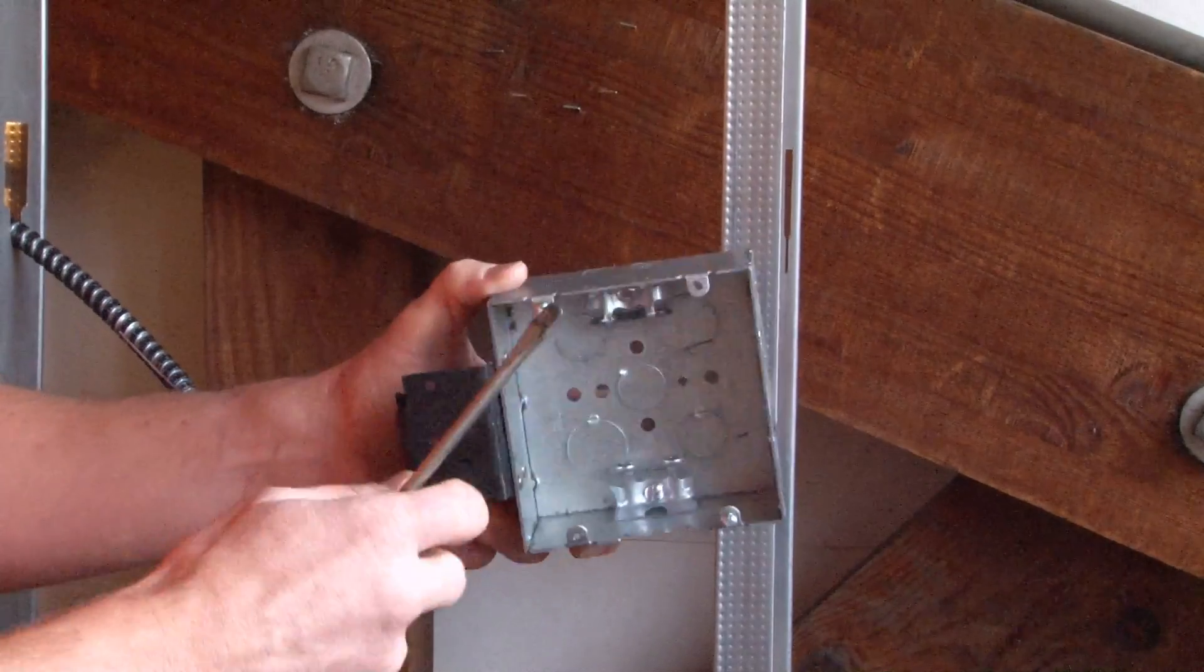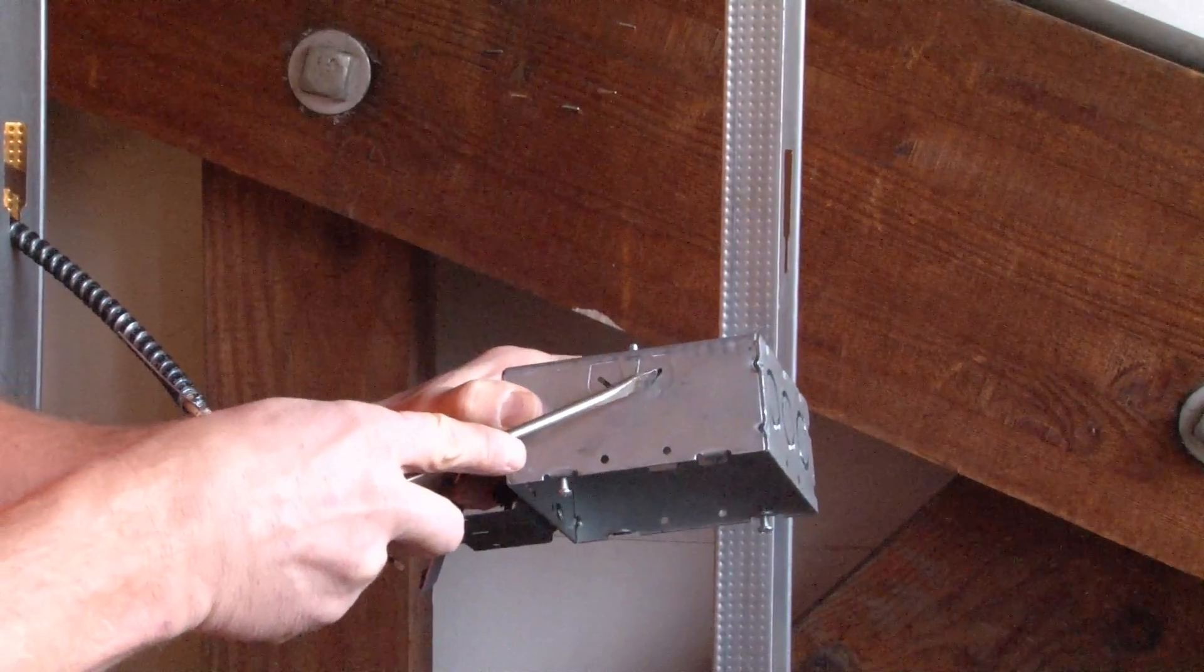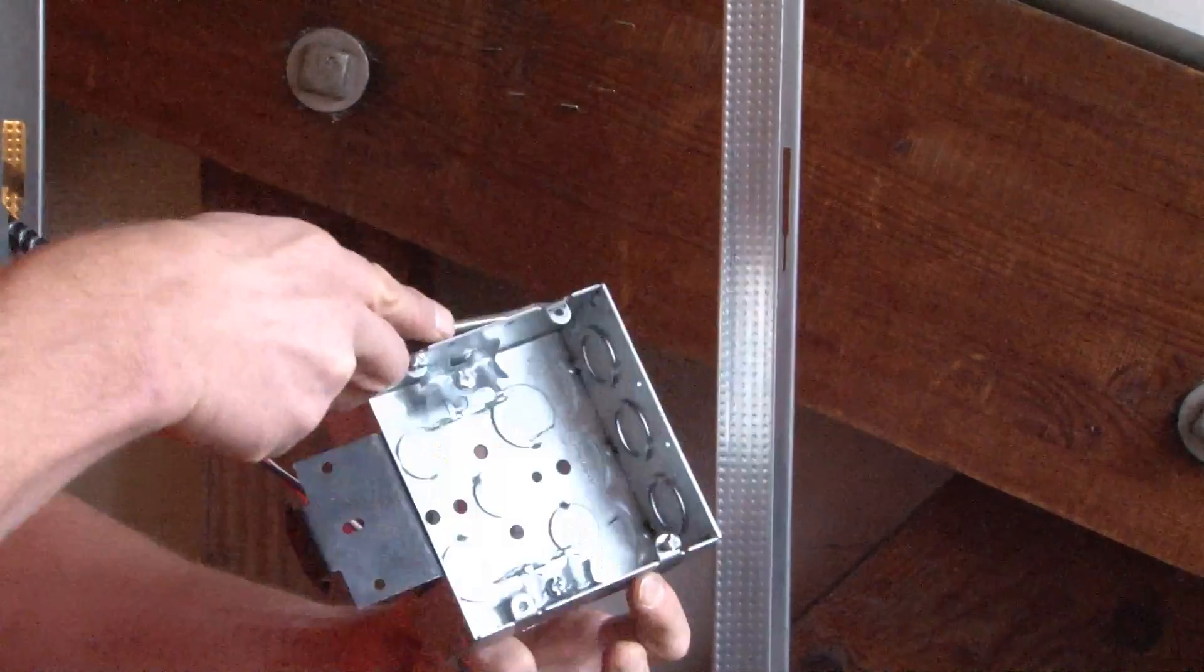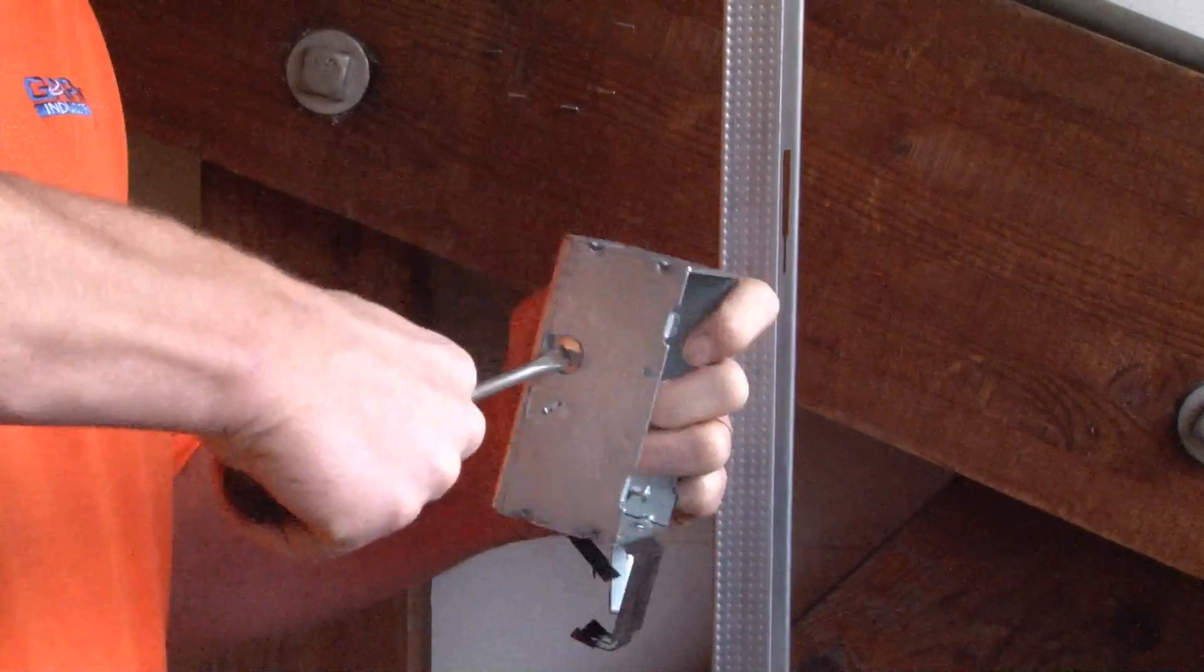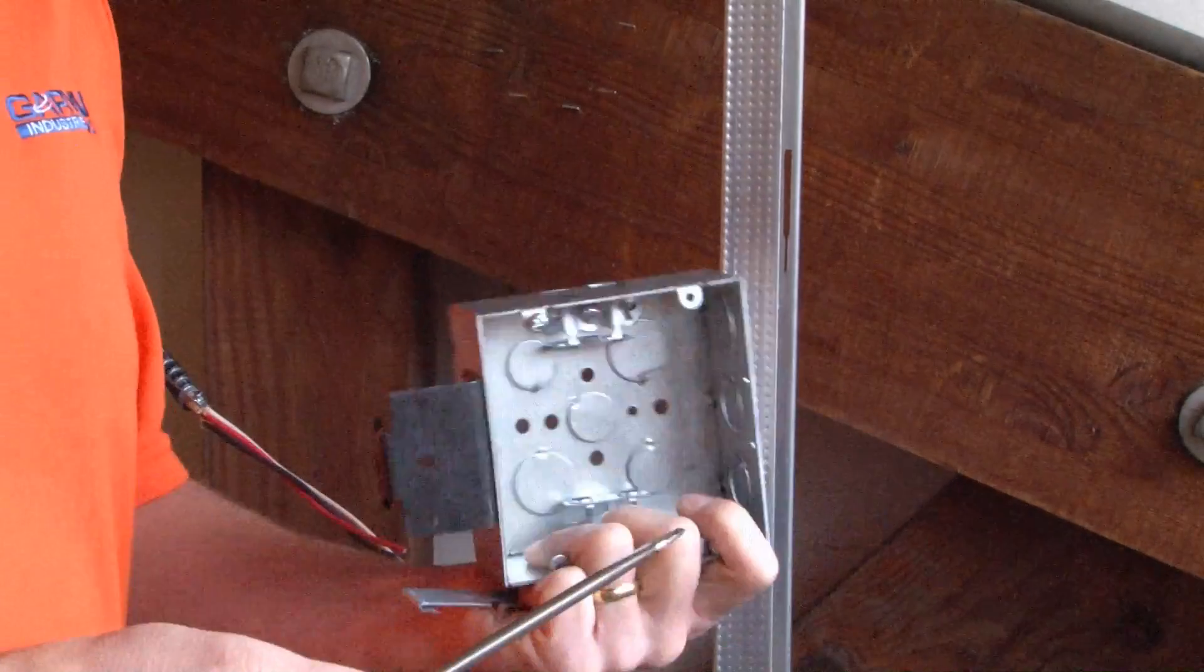To open one of these, you simply take a flathead screwdriver and remove the slug on the side of the box. Twist and it comes right out.